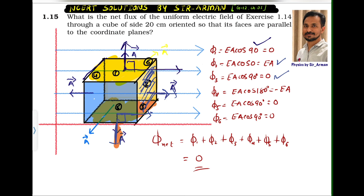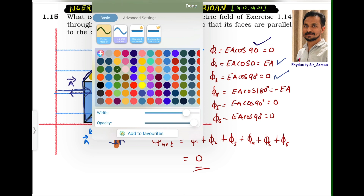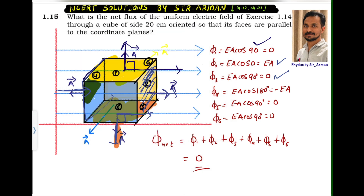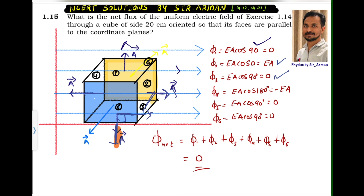For surface number four, which touches the electric field first, the area vector is pointing outward but the electric field is entering the surface. So the angle is 180°, giving E·A·cos 180°. Since cos 180° = −1, the flux through surface four is −E·A.